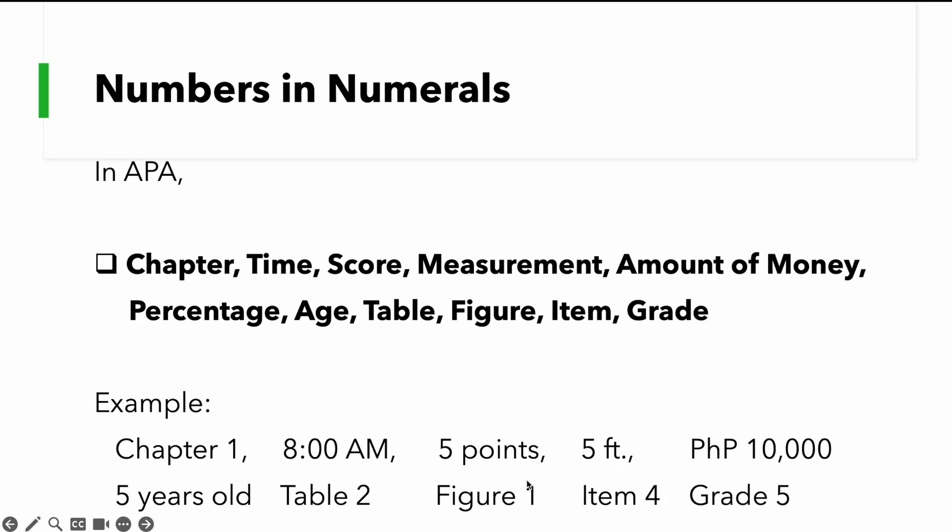Although, ang ilan dito ay single-digit numbers, based on general rule, kailangan isulat sila ng words. Pero dito, sabi sa APA, kapag itong mga ito na, kailangan sila ay isusulat as numerals. So, when we write grade 5, we write grade 5 with numeral 5. When we pertain to a particular item in the checklist, then we mention item, then we put the number. That's how it goes, guys.